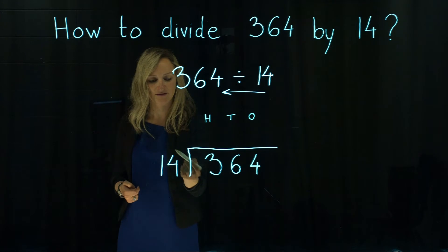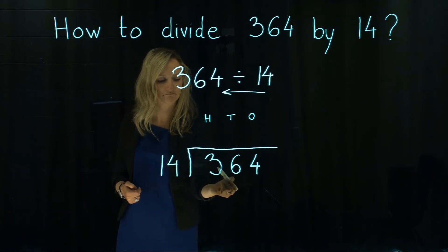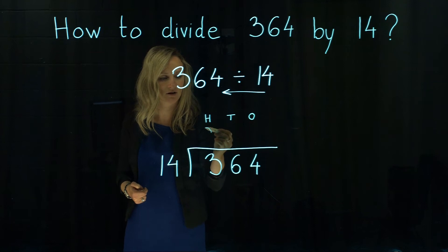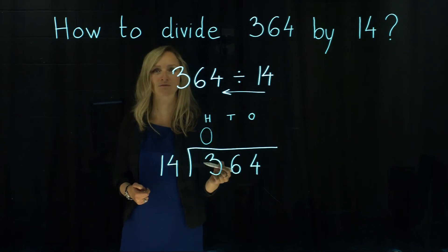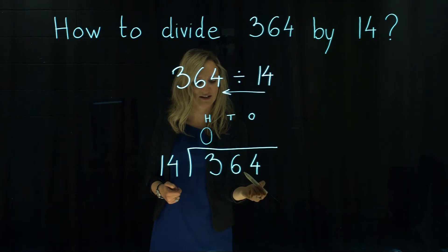And we ask ourselves, how many times our number 14 goes in number 3? It doesn't go, so we could easily write zero. But we don't have just 3, we have 364. So we can continue with the next digit then and we say,